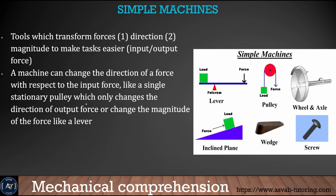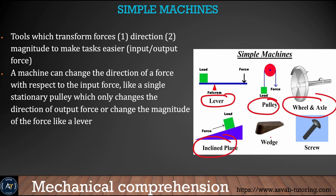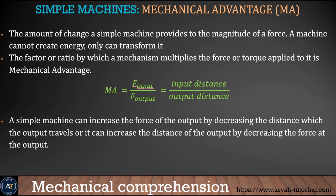Simple machines make your life easier. There are basically six different types of simple machines: lever, pulley, wheel and axle, inclined plane, wedge, and screw. We'll learn the mechanical advantage of each of those simple machines. The definition of mechanical advantage is force input over force output, same as input distance over output distance. Make sure that you write that down in your notebook.